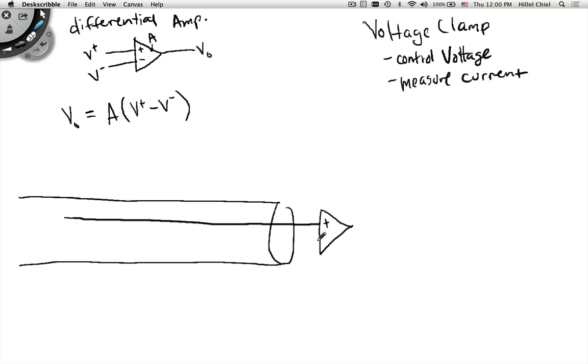And the negative side, they hooked to ground, which is effectively zero voltage. And that's this large and then smaller and then smaller line. And now the output of that is just going to be the membrane voltage Vm. So that's how you measure the membrane voltage.